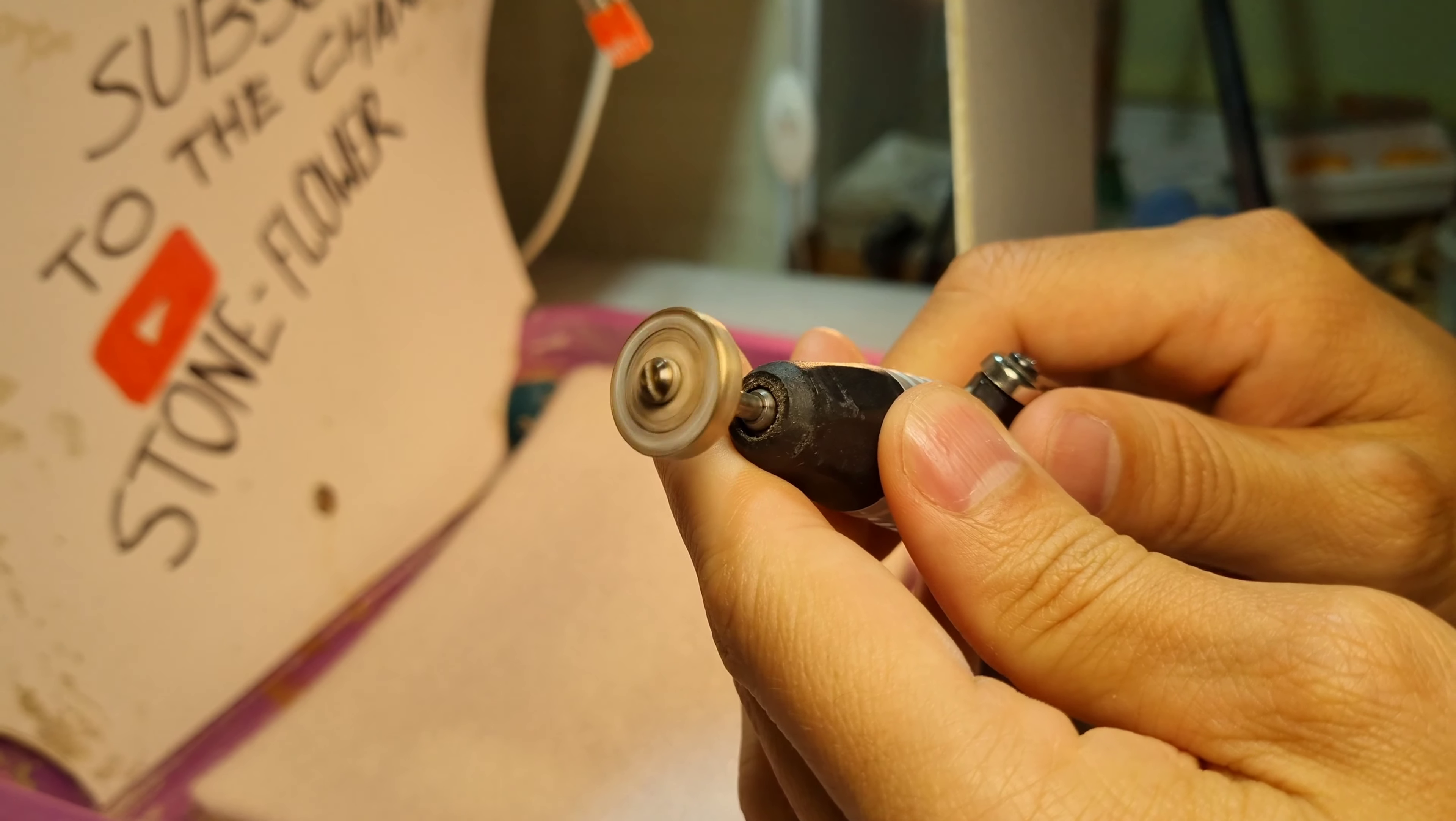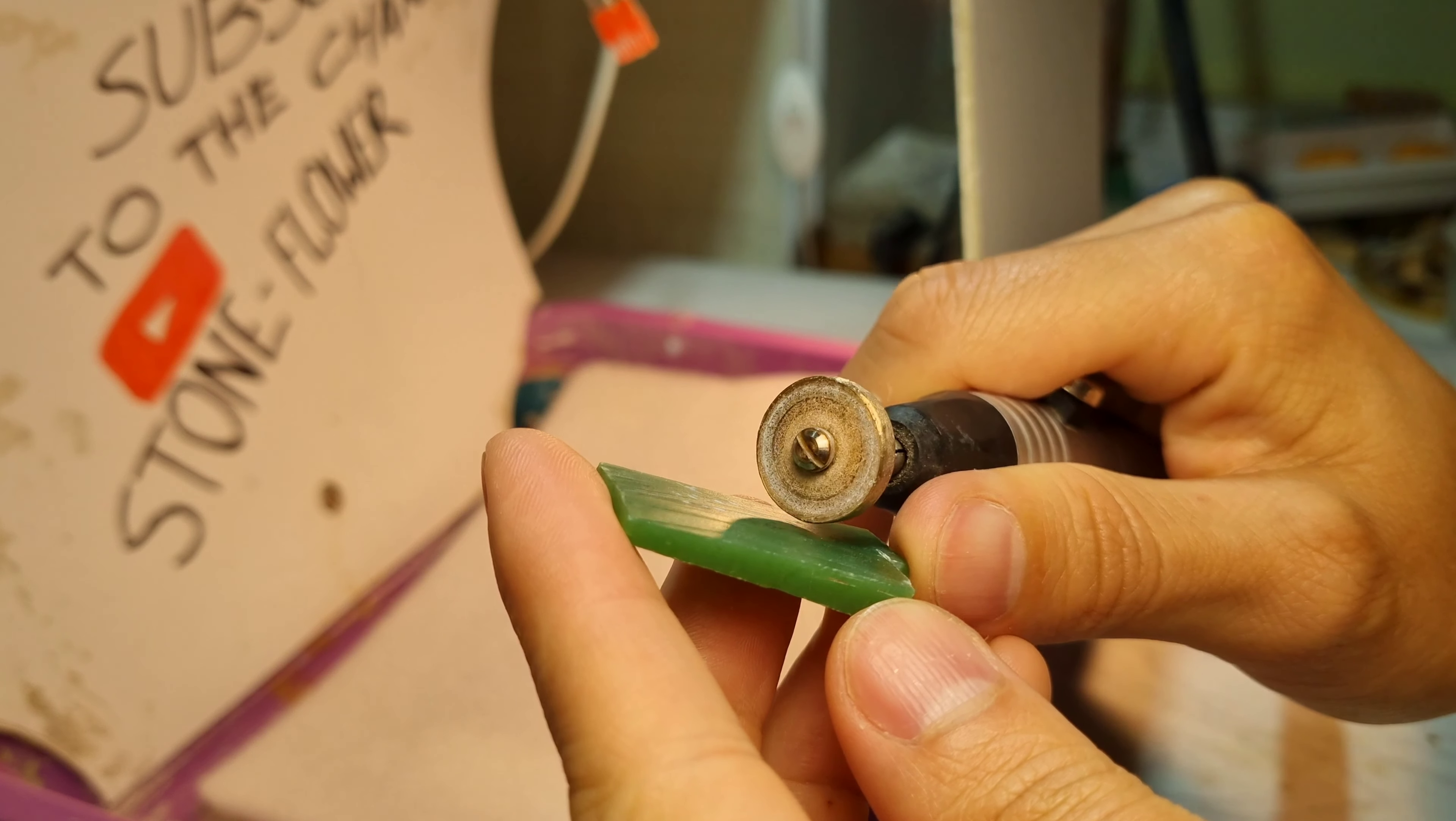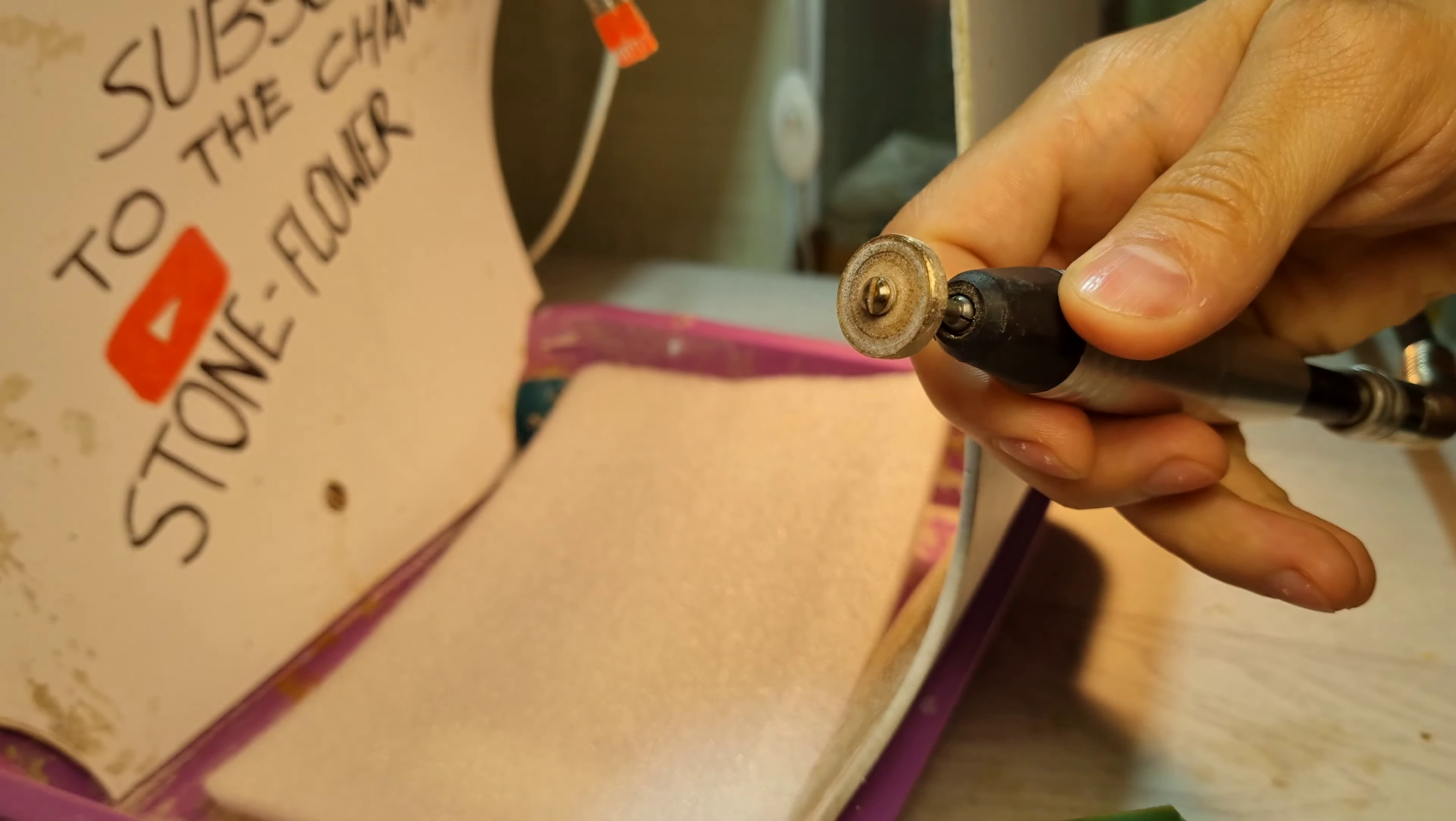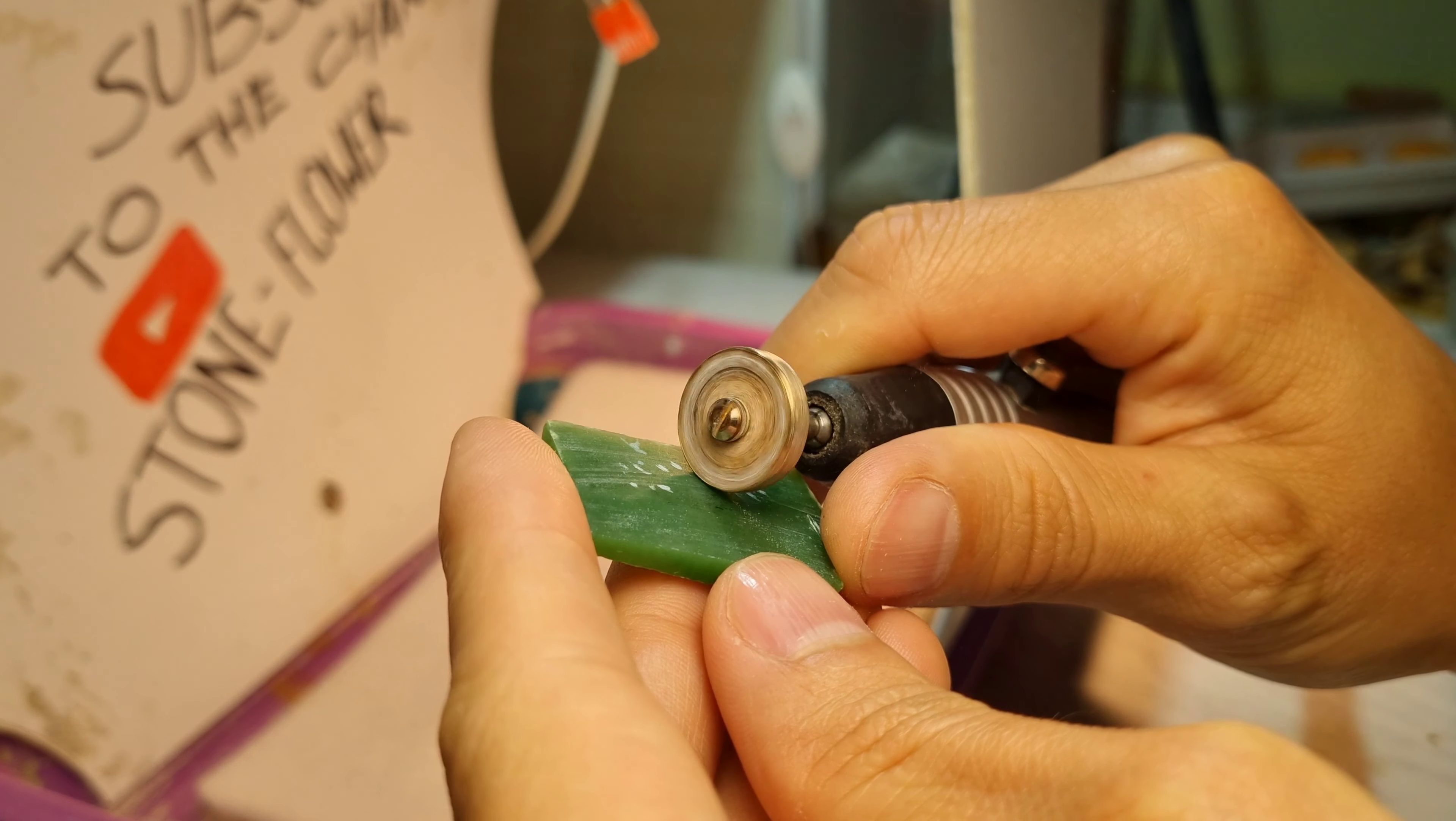Connect the tip to the drill. Let's check how the abrasive wheel will work without additional alignment. Check without water supply. You surely noticed a small knock in contact with the stone. This is due to the fact that the abrasive wheel is not clearly installed in the center.